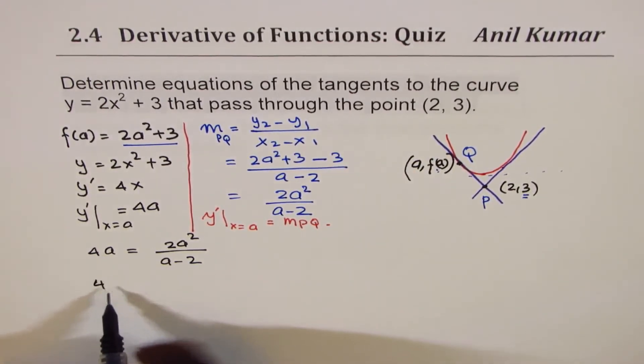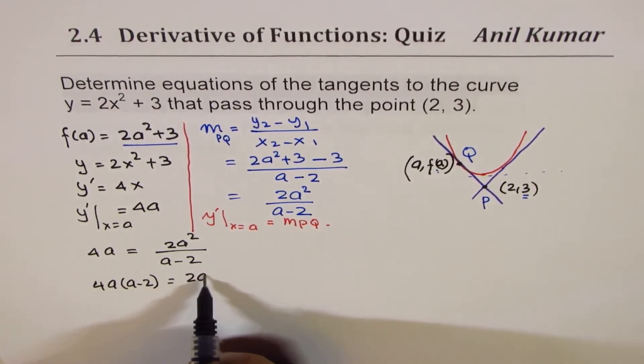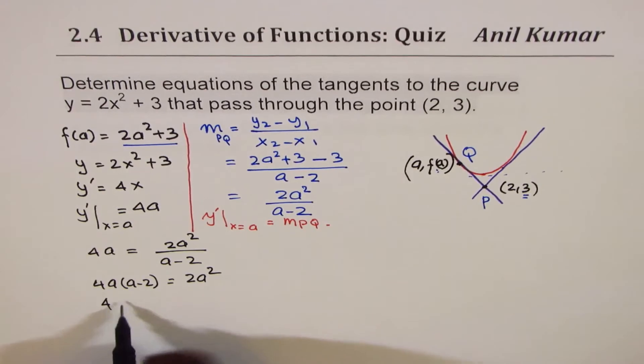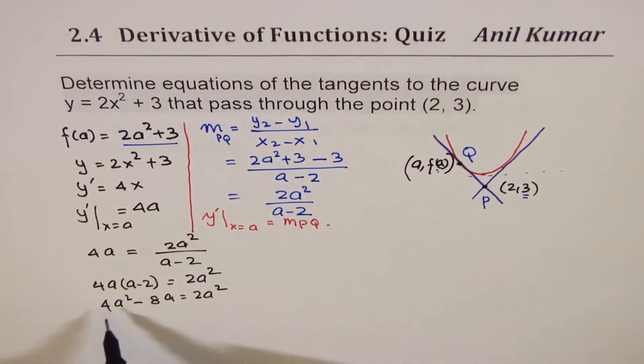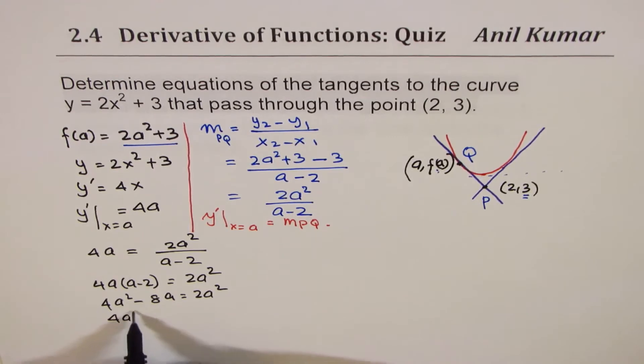So we get 4a equals 2a squared over (a minus 2). So now we can cross multiply. So we have 4a times (a minus 2) equals 2a squared. So that is 4a squared minus 8a equals 2a squared.